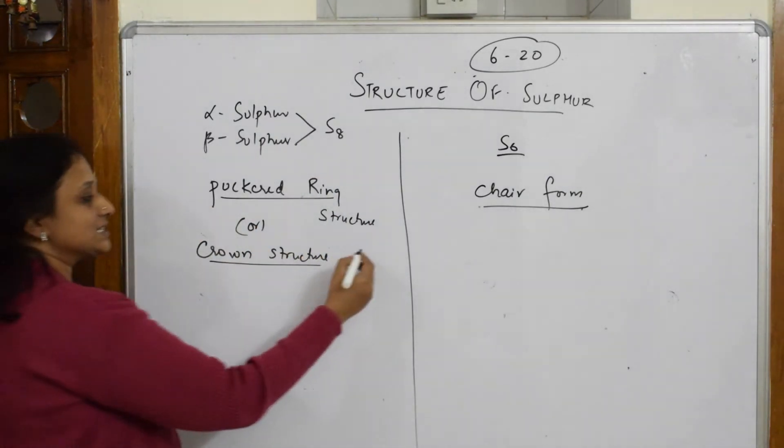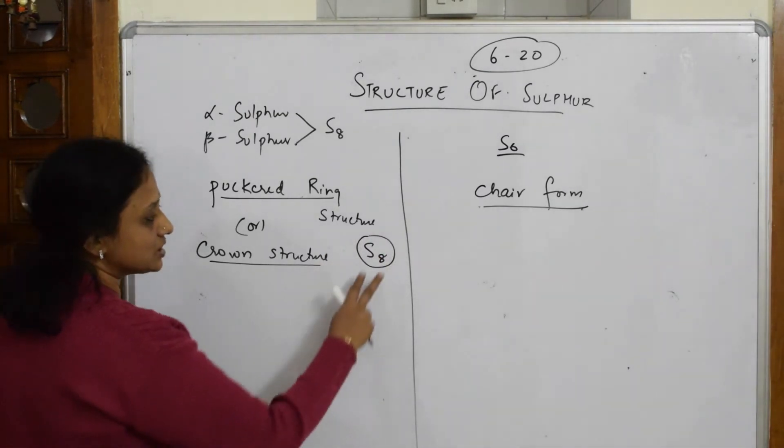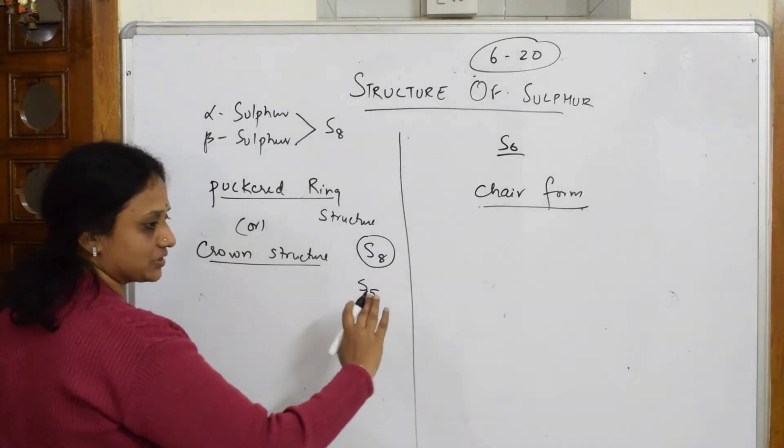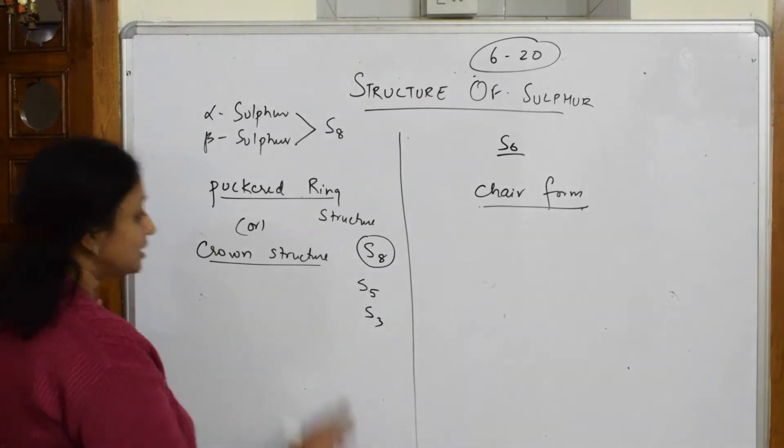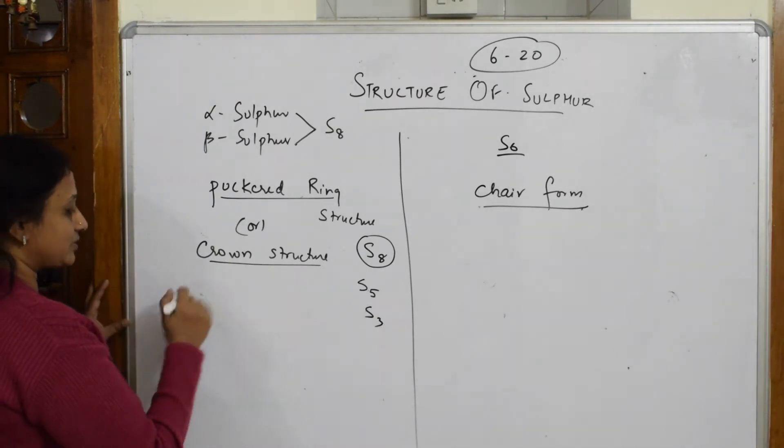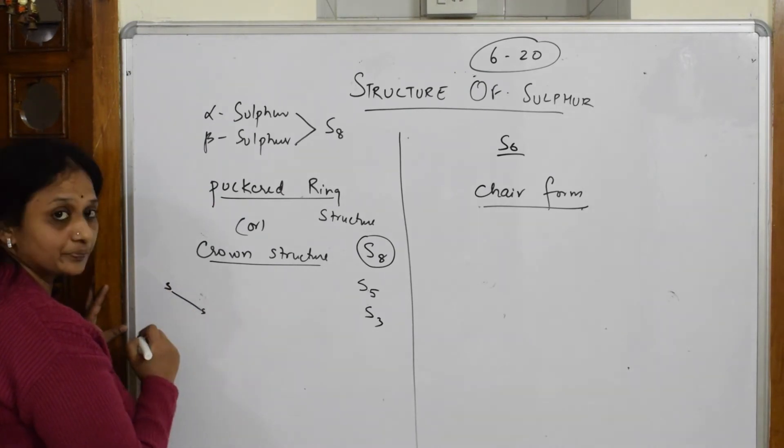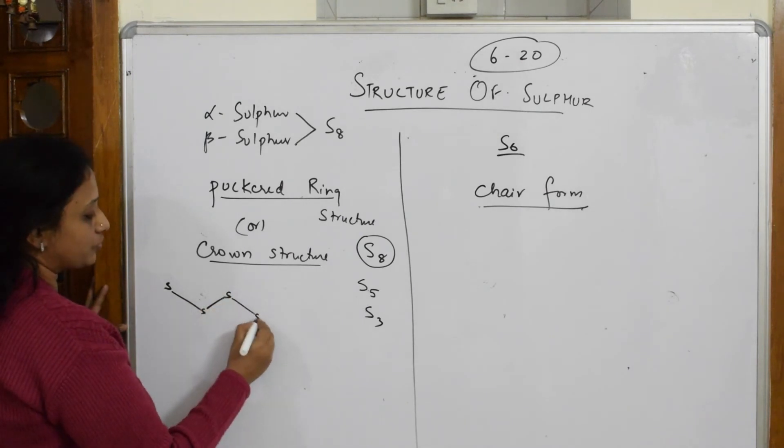Now when I have to draw the puckered ring structure S8, it's simple. In the first layer, make S5. Start from here, then one link, two, three come down, four down, five over - the first layer is over, S5.